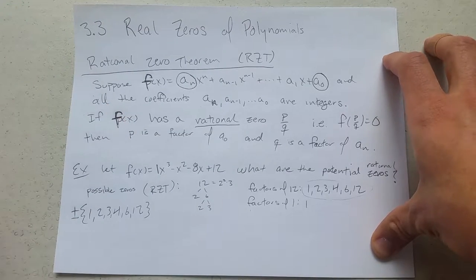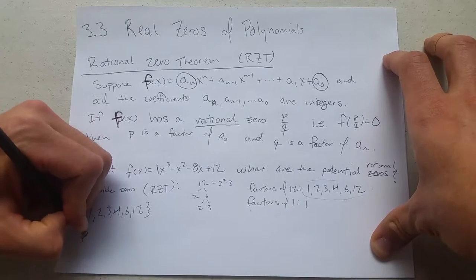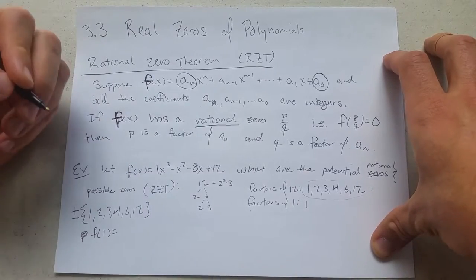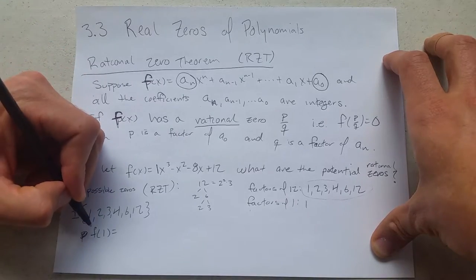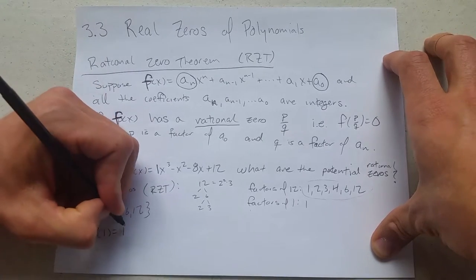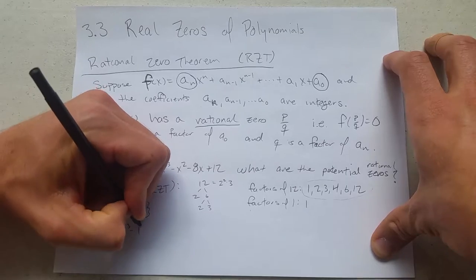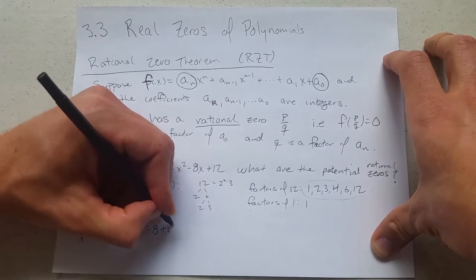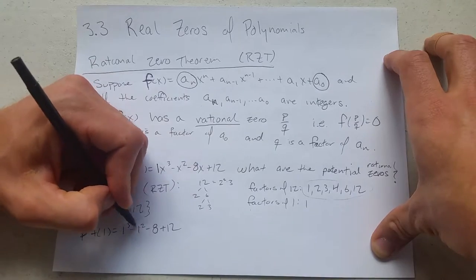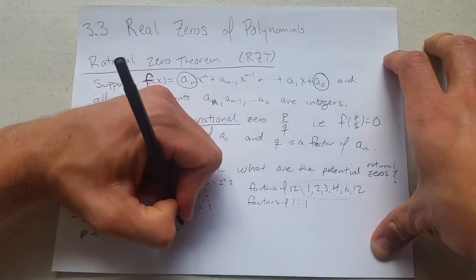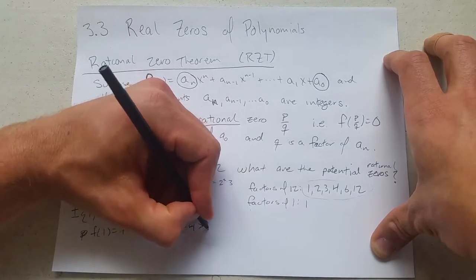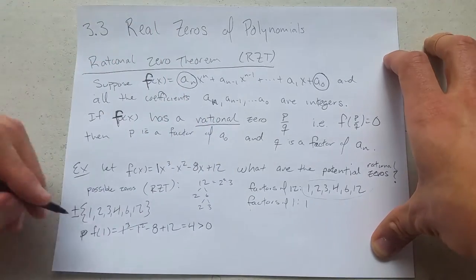How do we know which ones work? Our function is f. So we're just going to take these values and plug them into f. I like to start with 1 and -1. Plug in 1 quickly: we got 1³ - 1² - 8(1) + 12. 1 - 1 cancels. -8 + 12 is 4. 4 is not 0, so that one failed.